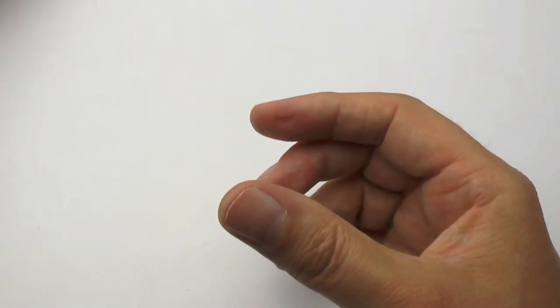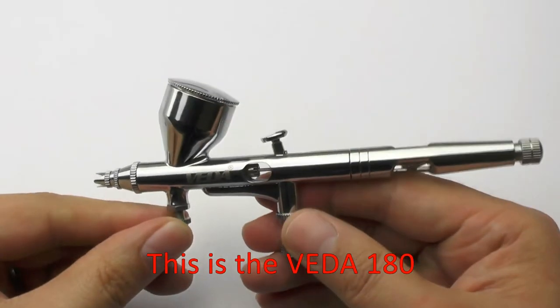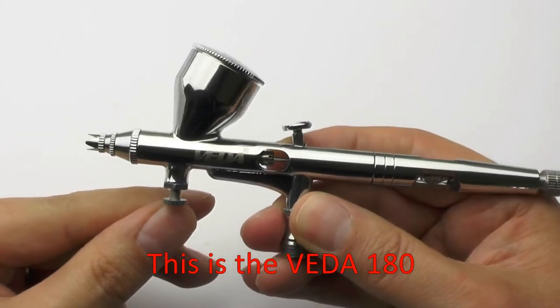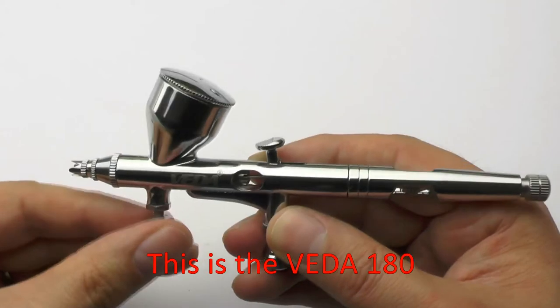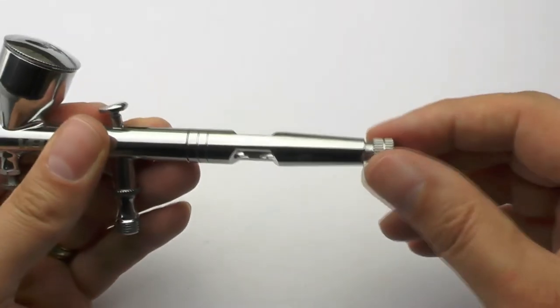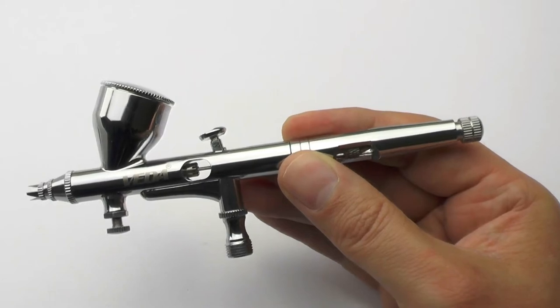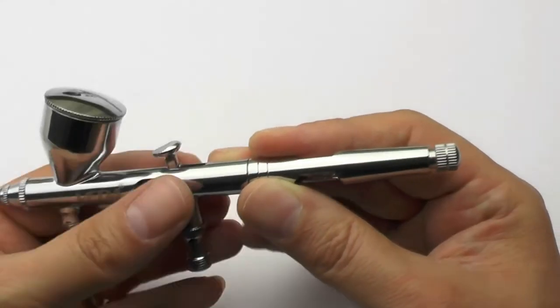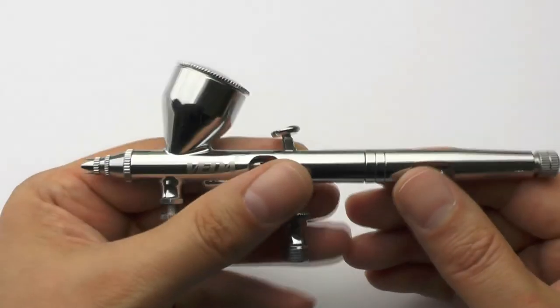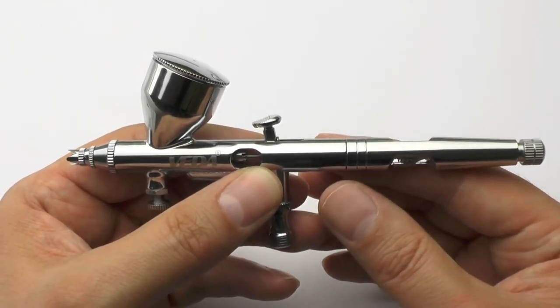Moving up a little bit more, I've got the Veda 186, again dual action press down for air pull back for paint. This has actually got a micro air control just here and that really allows for quite fine detailed artwork and it has the adjuster on the back as well. Dual action, stoppers at the back, very easy to change the needles, the nozzles, the nozzle caps and so on. The key word really is just to be delicate with it.